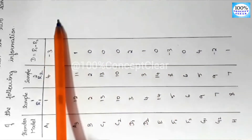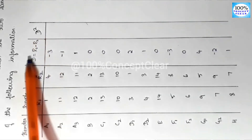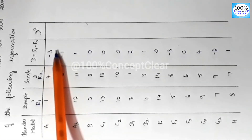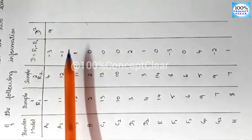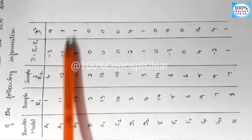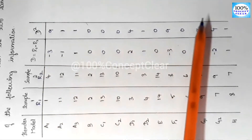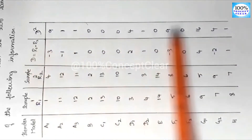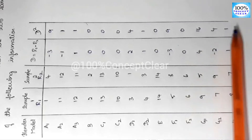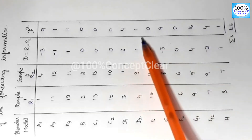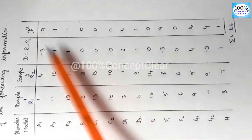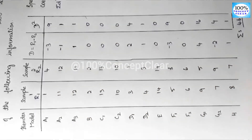Next we compute the D-square values. The D values squared are: minus 3 squared equals 9; minus 1 squared equals 1; 1 squared equals 1; then 0, 0, 0, 4, 1, 0, 9, 0, 16, 4, 1. Adding all D-square values: 9 + 1 + 1 + 4 + 1 + 9 + 16 + 4 + 1 equals 46. So the summation of D-square equals 46.